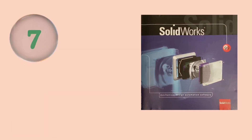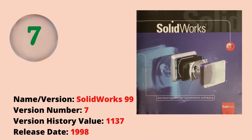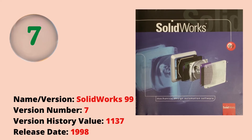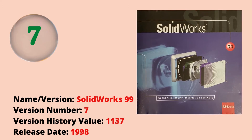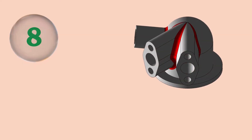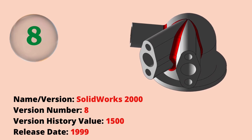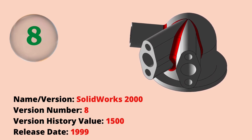The seventh version was SOLIDWORKS 99 with a version history value of 1137. The release date was 1998. The eighth version was SOLIDWORKS 2000 whose version history value jumped to 1500. The release date was 1999.